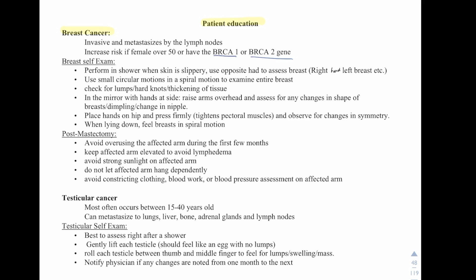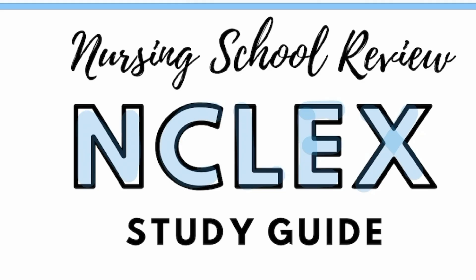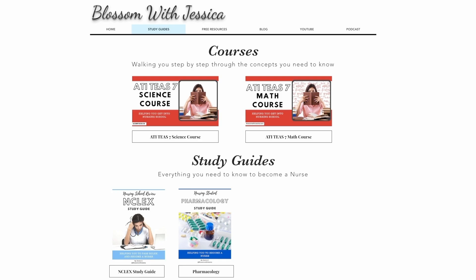Testicular cancer most often occurs between 15 and 40 years old and can metastasize to the lungs, liver, bone, adrenal glands, and lymph nodes. When teaching patients about a testicular self-exam, it's best to assess right after a shower — gently lift and feel around; it should feel like an egg with no lumps. Roll them around to feel for lumps, swelling, and masses, and notify your doctor of any changes from one month to the next. If you would like a copy of this study guide, you can find it on my website, blossomwithjessica.com.